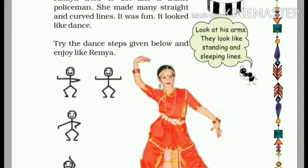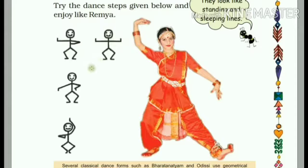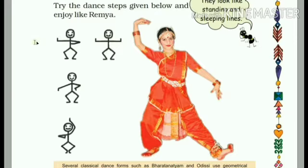Okay students, let's start. The next topic is: try the dance steps given below and enjoy. You have to follow some dance steps below. You have to look at the figure and identify the same type of lines. So students, what do you have to do? You have to identify the straight lines which lines are forming. So let's look at which lines are forming — where is the standing line, where is the sleeping line, where is the slanting line, and where is the curved line.